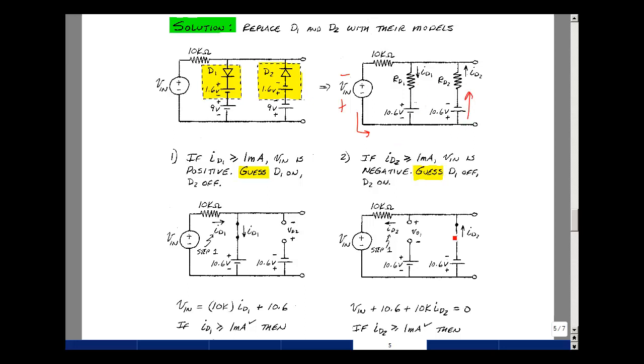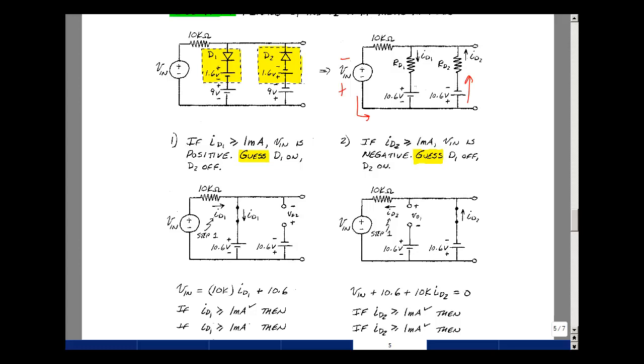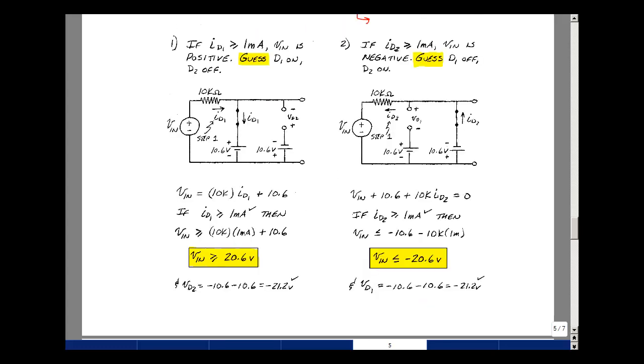So I'm going to guess that diode 2 is a short, and diode 1 is an open, and we'll verify that that was the correct guess. Let's just go around the loop then. The drop in voltage is VN. The drop is 10.6, and then the current ID2 flows in the 10k resistor.